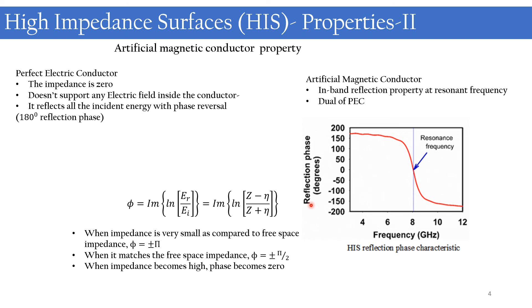At the resonant frequency, high impedance surfaces provide infinite impedance, and at this frequency the reflection phase becomes zero. Because of these properties — high surface impedance and in-band zero reflection phase — high impedance surfaces can be considered as the dual of a perfect electric conductor. For a perfect electric conductor the impedance is zero, while for an artificial magnetic conductor the impedance is infinity; the PEC has a reflection phase of 180° while the HIS has a reflection phase of 0°. Because of this dual characteristic, it is also known as an artificial magnetic conductor.